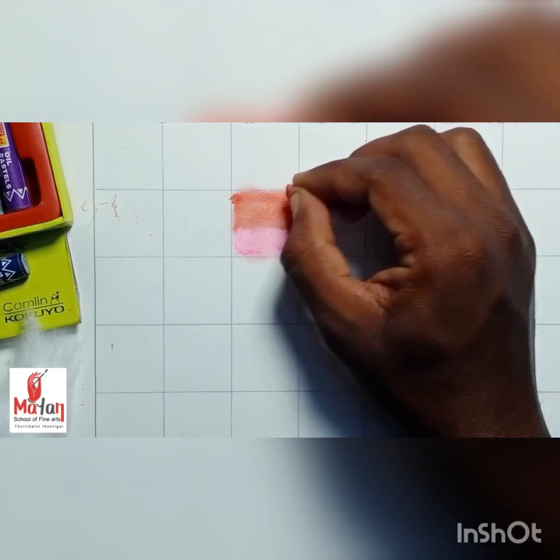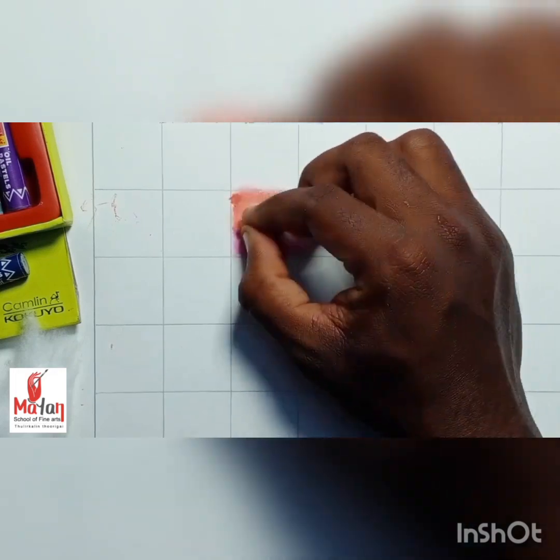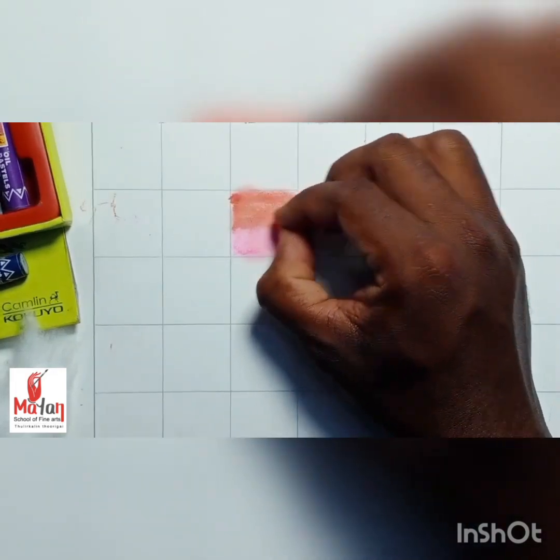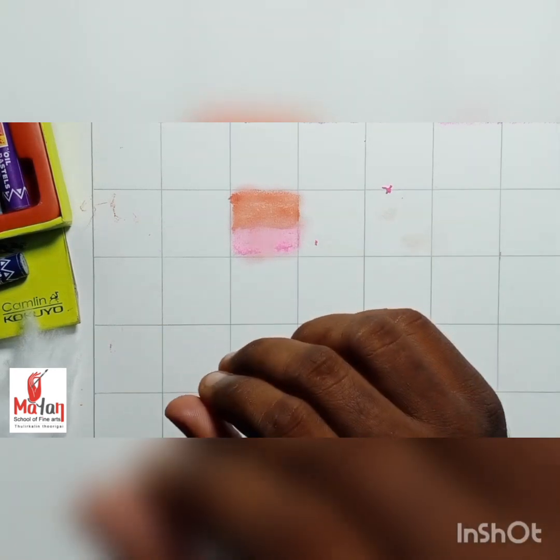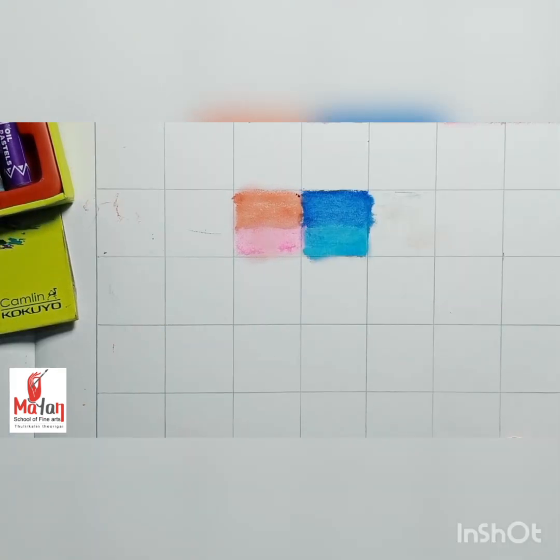It will become perfect. This is called dry blending. Then we are moving to learn about wet blending with cotton.